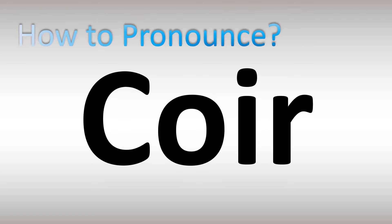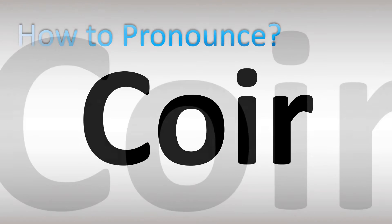We are looking at how to pronounce this word. Let's break down the different pronunciations. Textile fiber. In British English, it's said as Khoia — Khoi — with stress on the first syllable. Now in American English, it's usually pronounced rather as Khoia.